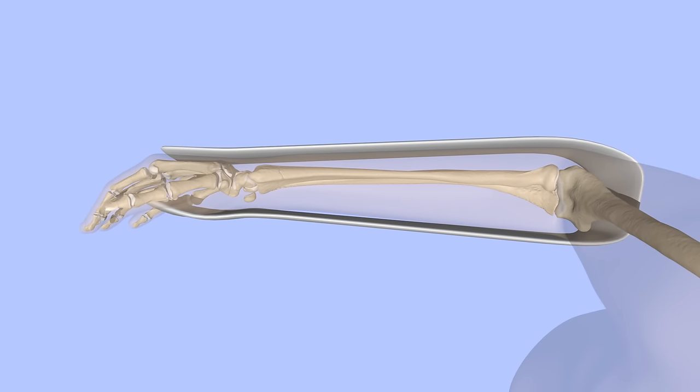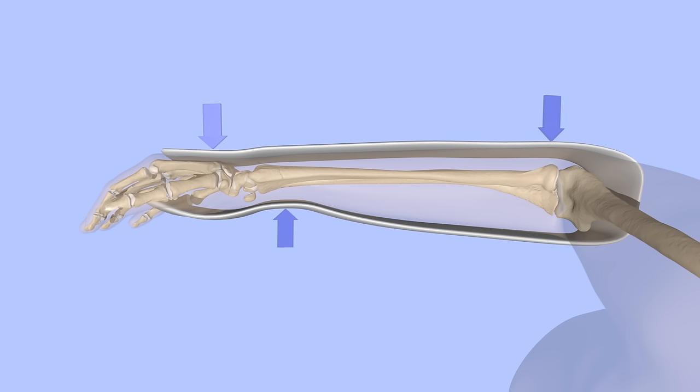The cast or splint is applied using three-point molding. One hand is applied at the fracture site, another distal to the fracture site on the opposite side of the wrist, and an assistant's hand is applied at the elbow. This molds the cast or splint in such a way as to prevent the fracture from moving back out of alignment.